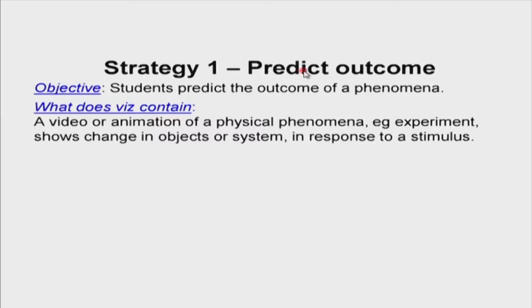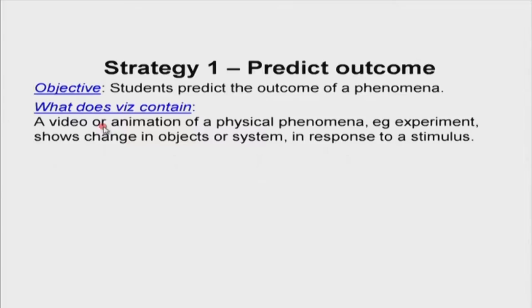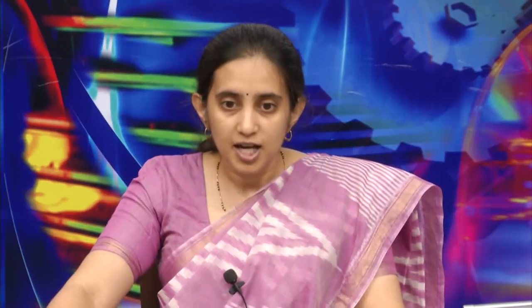We will now look at some examples of the use of visualization. The first strategy is called predict outcome. The learning objective is that students should be able to predict the outcome of physical phenomena. The visualization — an animation, simulation, or video — shows the physical phenomena. For example: increasing the current and observing what happens to voltage, increasing a car's speed and asking what happens to its trajectory, or changing time and asking what happens to the signal. There is some input variable that changes, and you want to see what happens to the output.